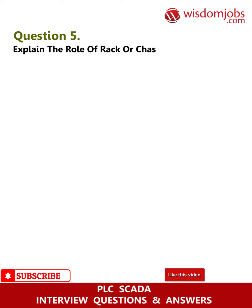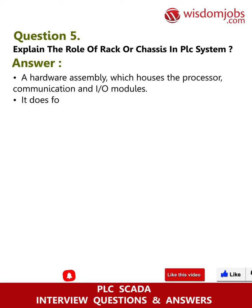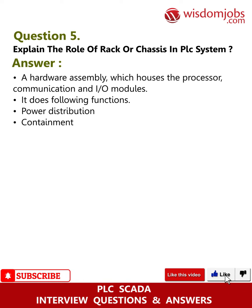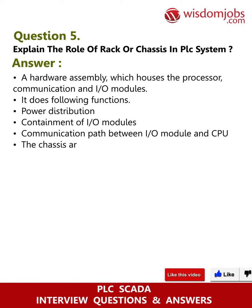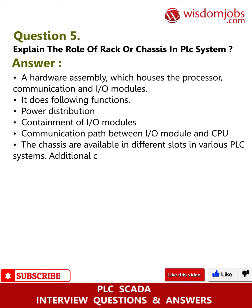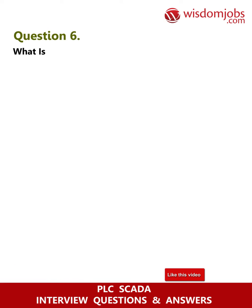Question 5: Explain the role of rack or chassis in a PLC system. Answer: A hardware assembly which houses the processor, communication, and IO modules. It performs functions such as power distribution, containment of IO modules, and providing a communication path between IO modules and the CPU. Chassis are available in different slot sizes in various PLC systems, and additional chassis can be connected using chassis interconnecting cables.